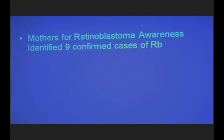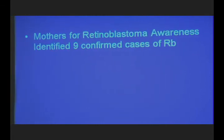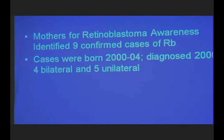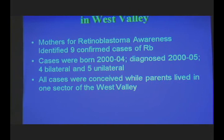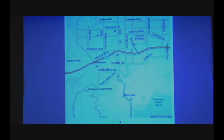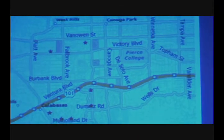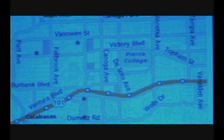I want to start with the evidence of a retinoblastoma cluster in West Valley. This comes from the community group that identified at least nine confirmed cases of retinoblastoma in the West Valley. These cases were born between 2000 and 2004 and were diagnosed between 2000 and 2005. Four of those cases are bilateral and five are unilateral. All the cases were conceived while the parents lived in one sector of the West Valley. This map was prepared by Cindy and Jeff Mays.